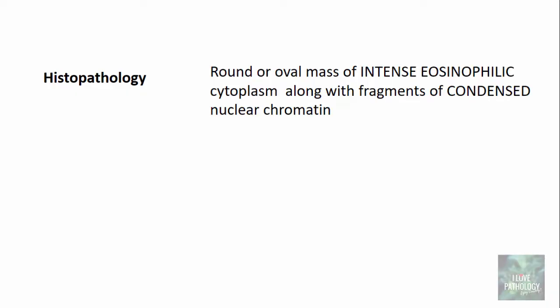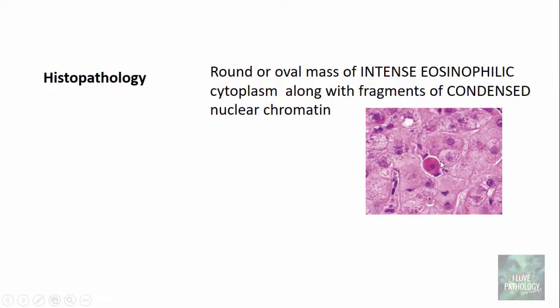The first and foremost is histopathological examination. In histopathological examination, the apoptotic cells look round — a mass of intense eosinophilic cytoplasm along with fragments of condensed nuclear chromatin. You can see this hepatocyte which has undergone apoptotic cell death, where the cytoplasm is intensely eosinophilic and there is condensation of nuclear chromatin.